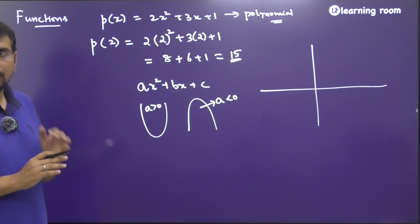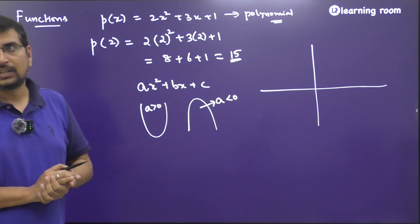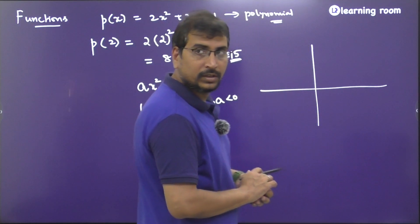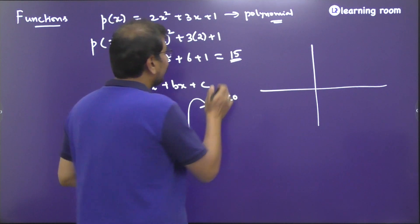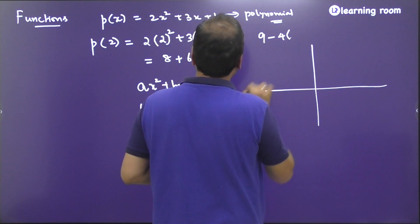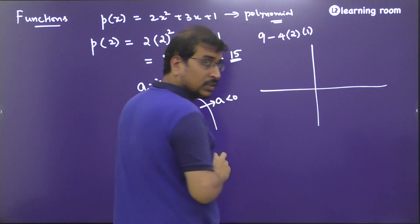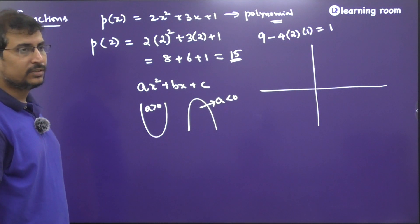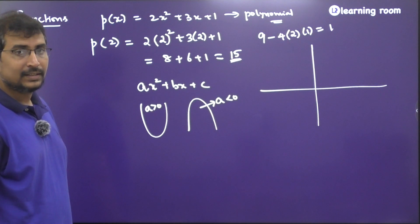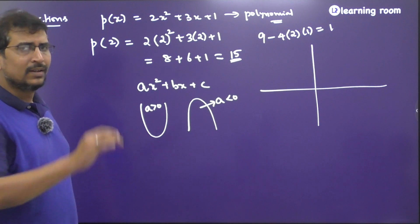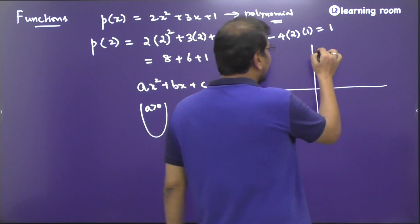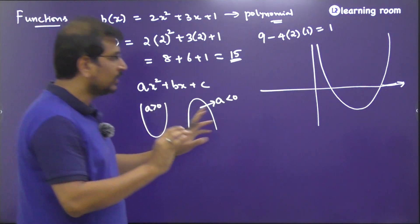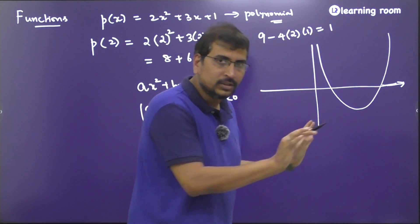Now find the discriminant of this expression: b² − 4ac = 9 − 4×2×1 = 1. It's a positive value, which means it has two real and distinct roots. I'm not concerned about finding those roots right now — I just know there are two of them somewhere on the graph.